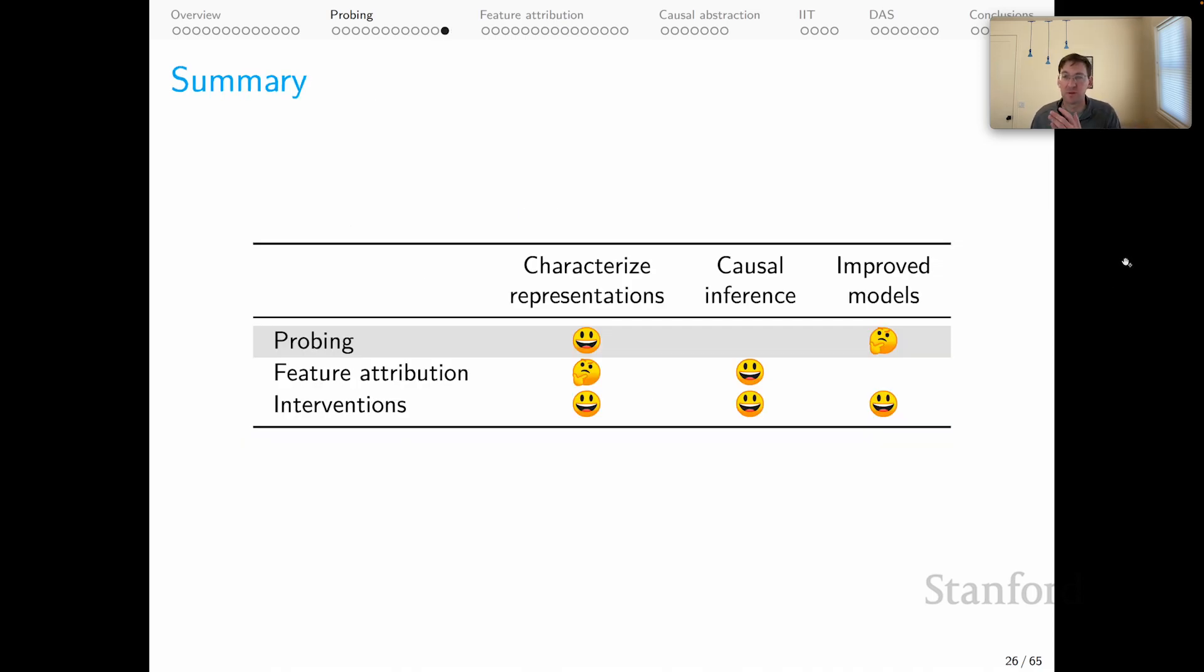So let's wrap up with our scorecard. Remember, probing can characterize representations really well. We use the supervised probe for that. So that's a smiley face. But probes cannot offer causal inferences. And I put a kind of thinking emoji under improved models because it's unclear to me whether multitask training is really a viable general way of moving from probes to better models.